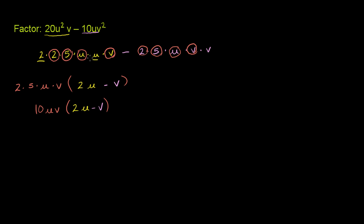Now, you won't be doing it to this granular level, but this is the best way to think about it. Eventually you're going to say, the largest number that divides both of these is a 10. Because 10 goes into 20, 10 goes into 10. And a u goes into both of these, and a v goes into both of these. So let me factor out a 10uv.